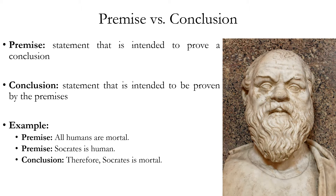Here's an example. All humans are mortal; Socrates is human; therefore Socrates is mortal. In this argument, the conclusion is 'therefore Socrates is mortal,' and the premises are 'all humans are mortal' and 'Socrates is human.' The premises prove the conclusion true, assuming they're true, and that's why they count as premises.